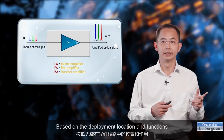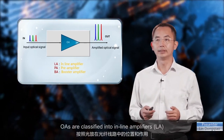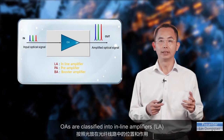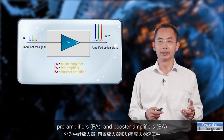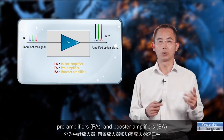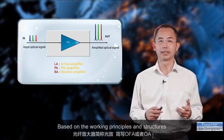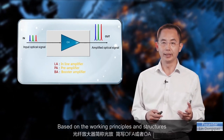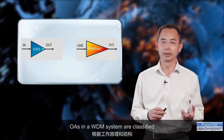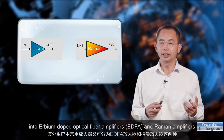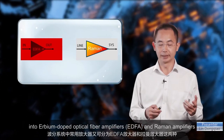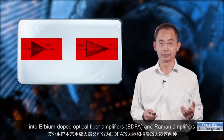Based on the deployment location and functions, optical amplifiers are classified into in-line amplifiers, pre-amplifiers, and booster amplifiers. Based on the working principles and structures, optical amplifiers in a WDM system are classified into erbium-doped optical fiber amplifiers and Raman amplifiers.